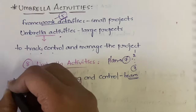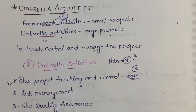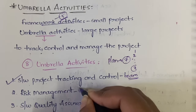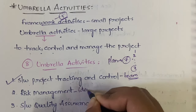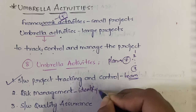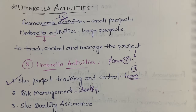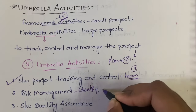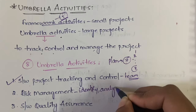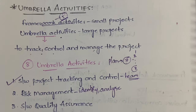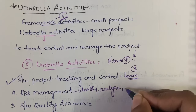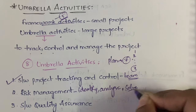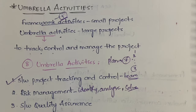The second umbrella activity is risk management. Risk management identifies the risk, analyzes it — what is the reason, from where it started — and then tries to solve or rectify the risk.